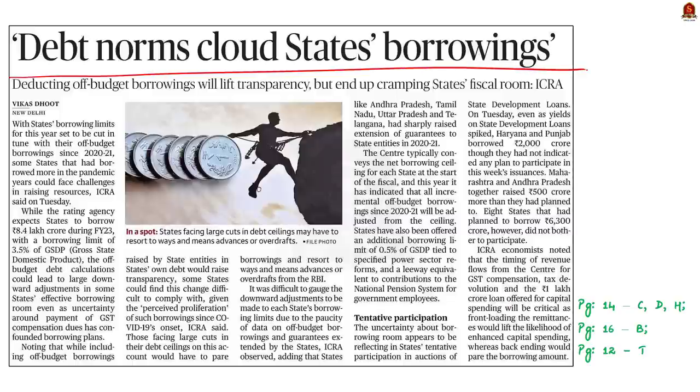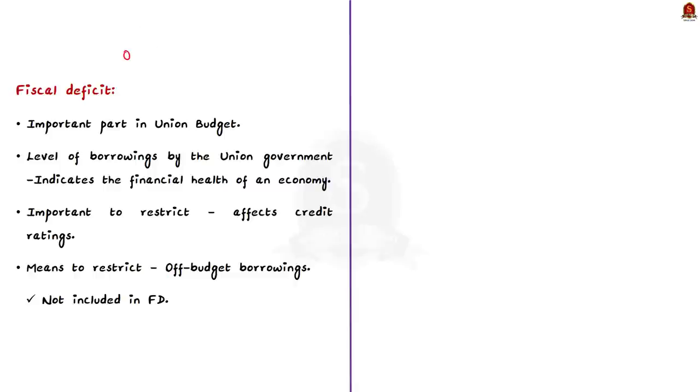Now, let us take up this news article. It says that states' borrowing limits for the year 2023 is said to be cut in tune with their off-budget borrowings since 2020-21. The states are expected to borrow 8.4 lakh crore rupees during financial year 2023 and they have a borrowing limit of 3.5 percentage of GSDP, that is gross state domestic product. Also, including the off-budget borrowings raised by state entities in state's own budget would raise transparency. So, today we are going to understand what do you mean by off-budget borrowing?